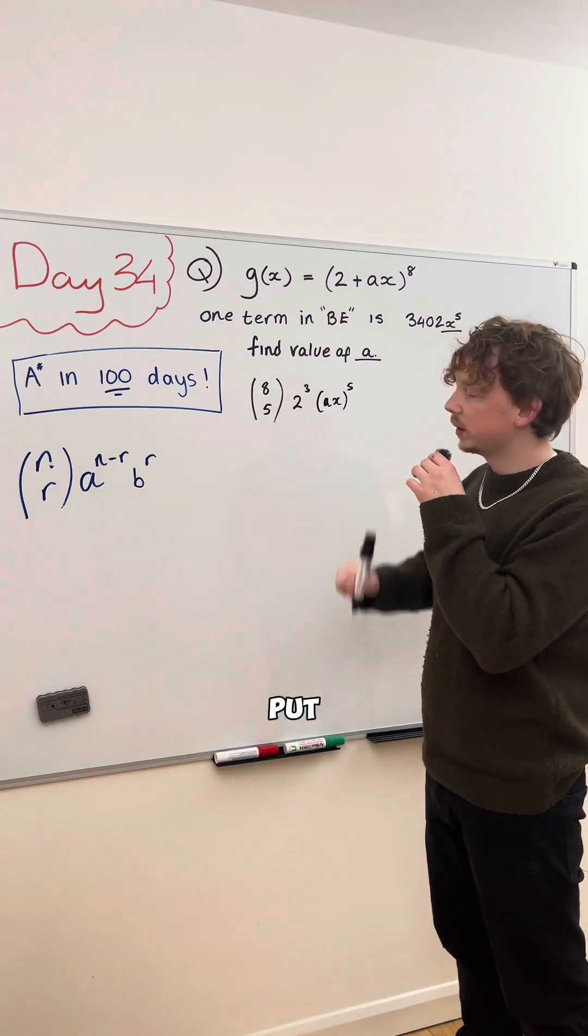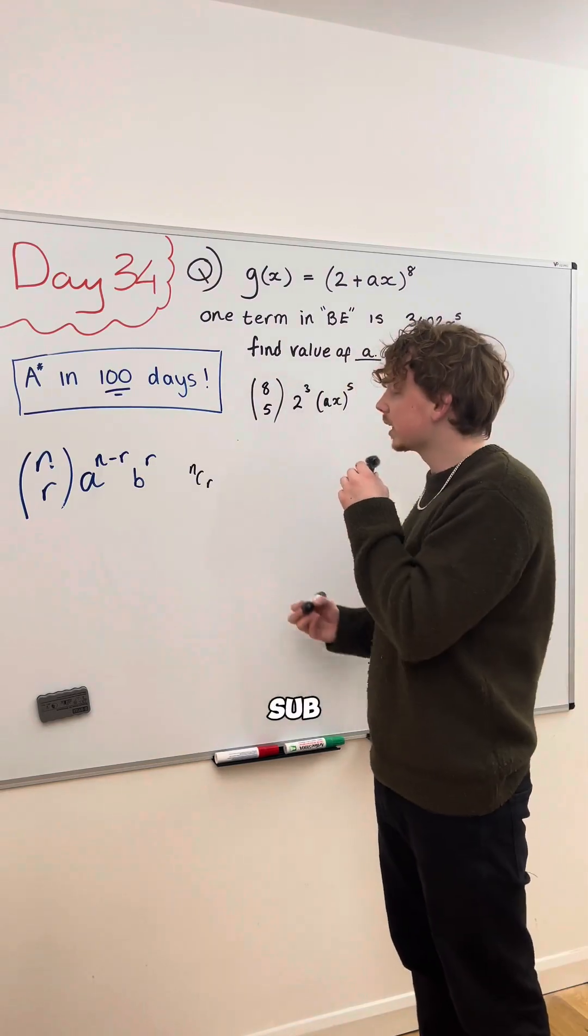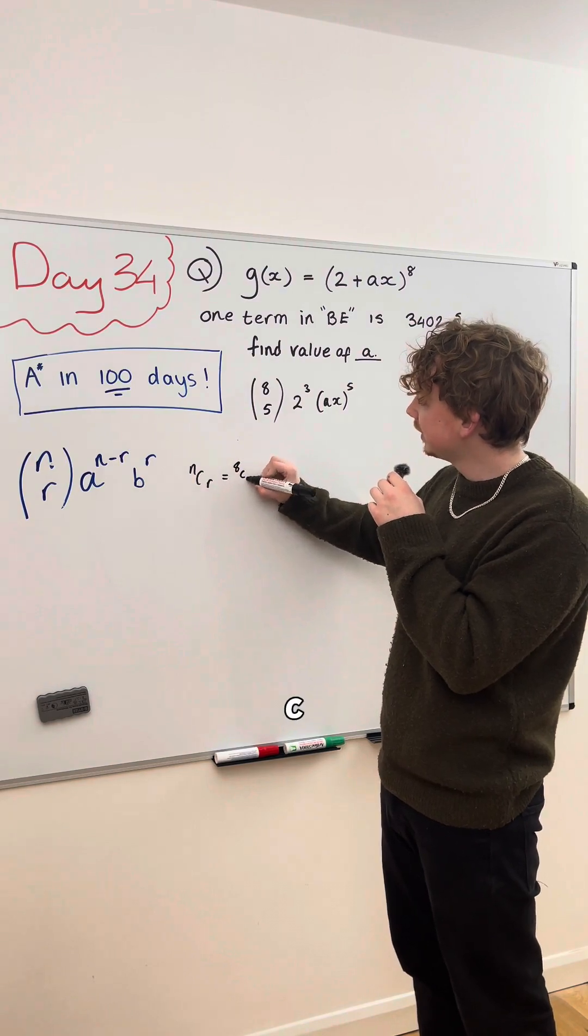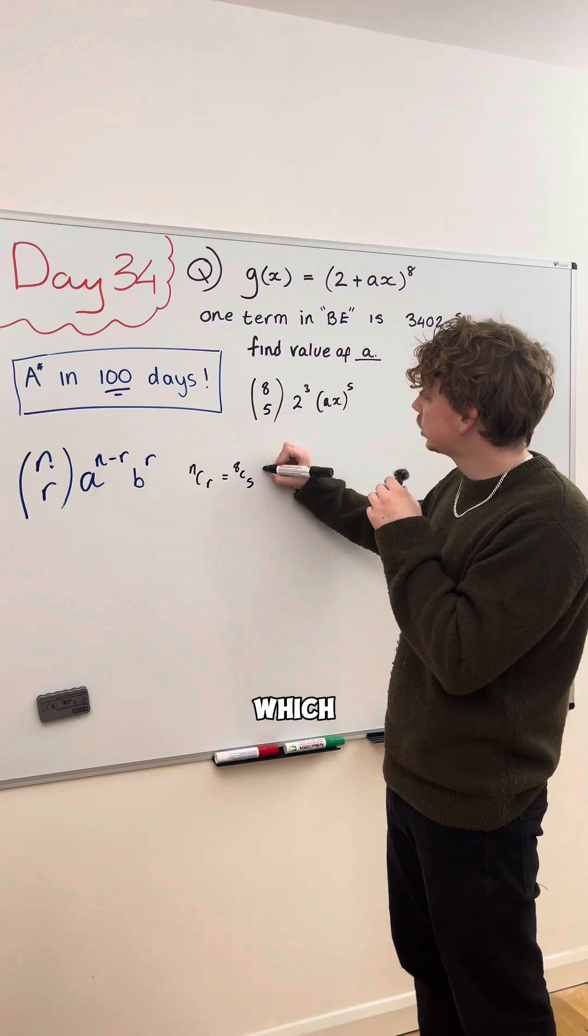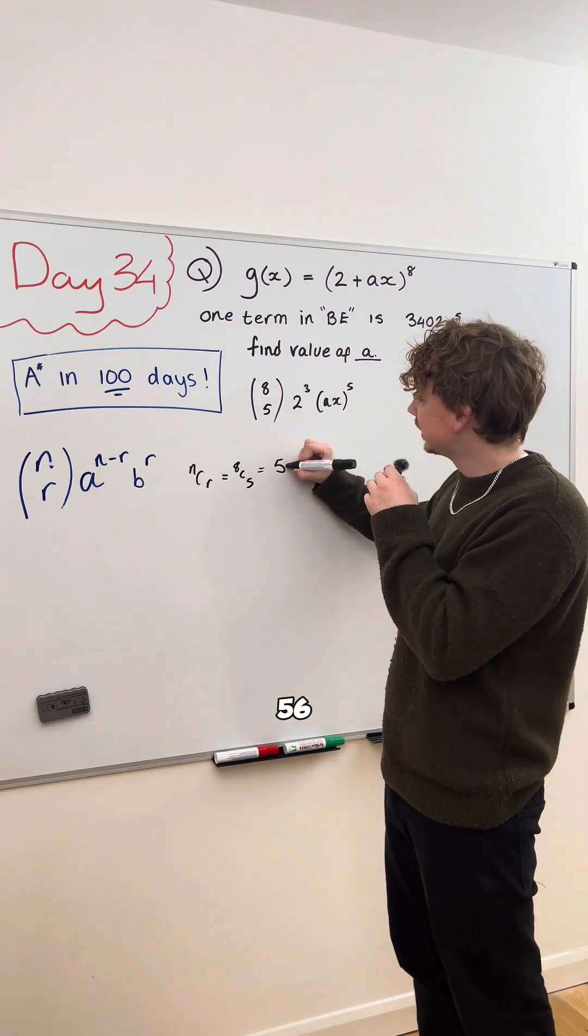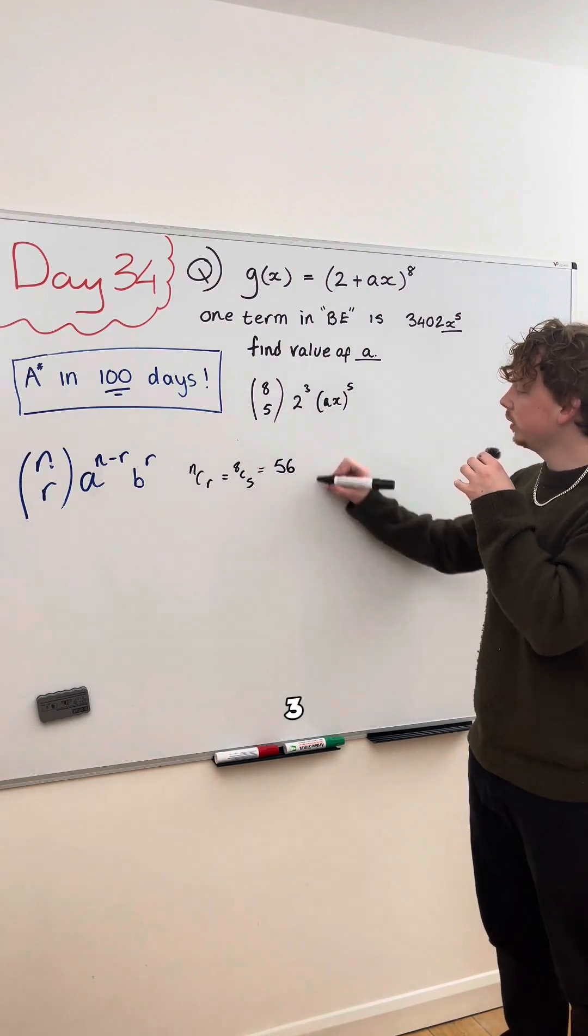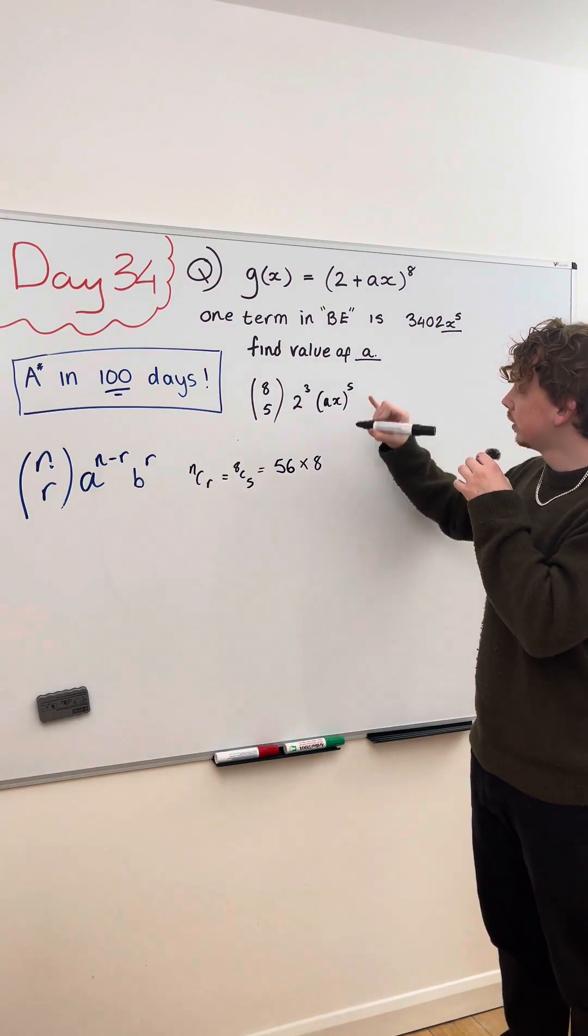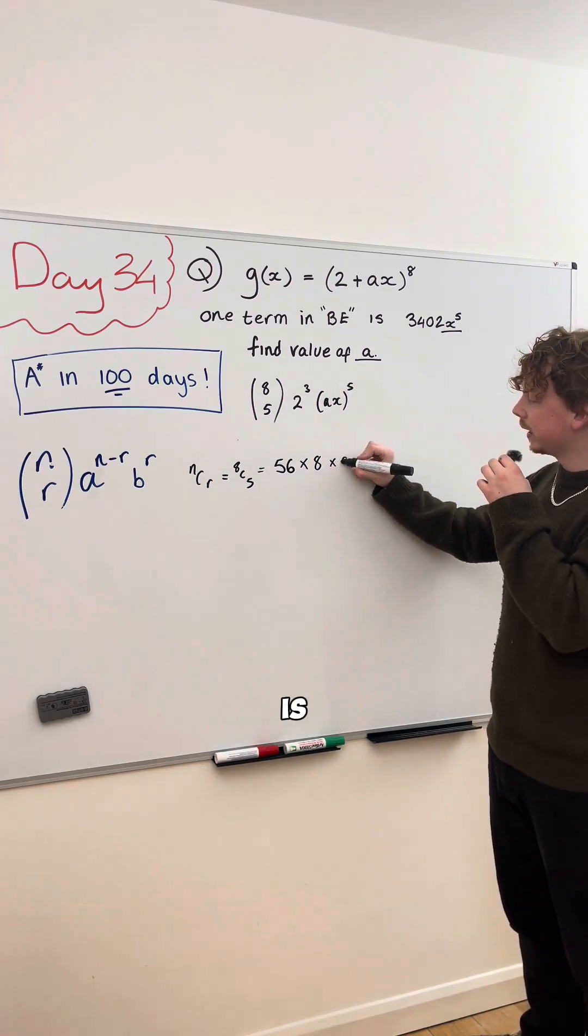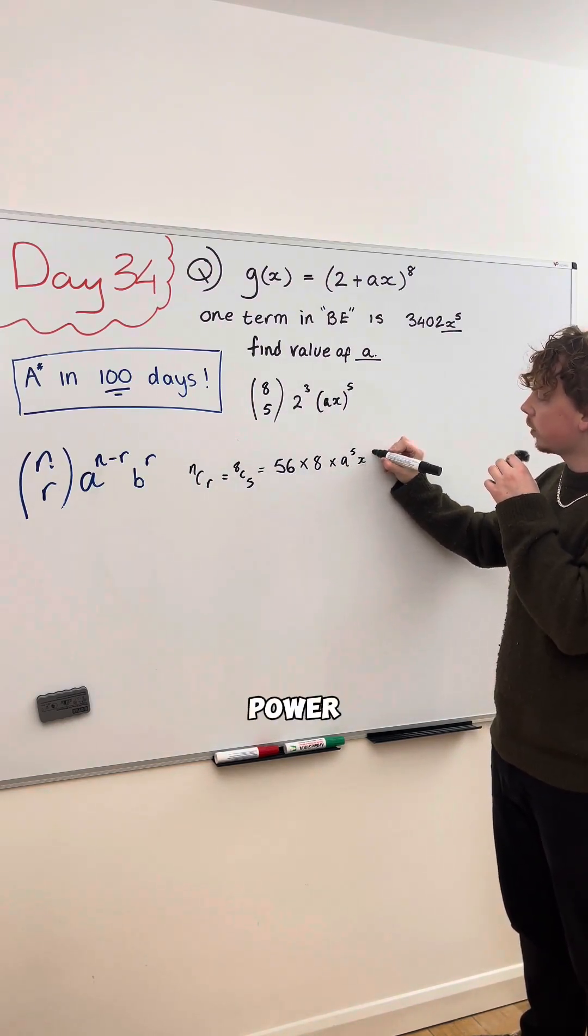Now, we can put this in our calculator, which we can sub in 8c5, which should give us 56, and then 2 to the power of 3 is 8. And A x to the power of 5 is A to the power of 5, x to the power of 5.